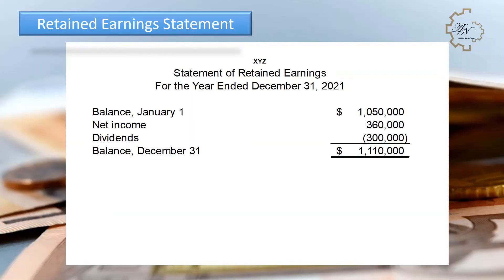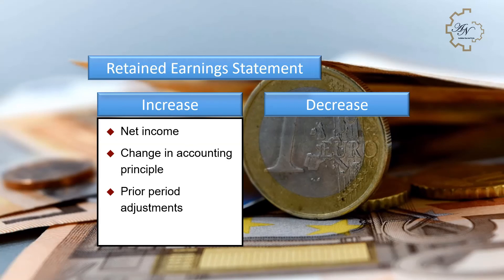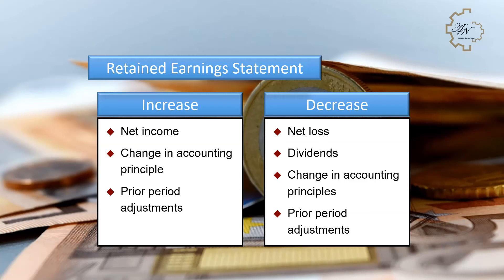The statement of retained earnings reconciles changes in the retained earnings account during a reporting period. It begins with the beginning balance, then adds or subtracts items such as profits and dividend payments to arrive at the ending retained earnings balance. The general formula is: Beginning Retained Earnings + Net Income − Dividends = Ending Retained Earnings. Retained earnings increase with net income and decrease with net loss, dividends, and changes in accounting principles.